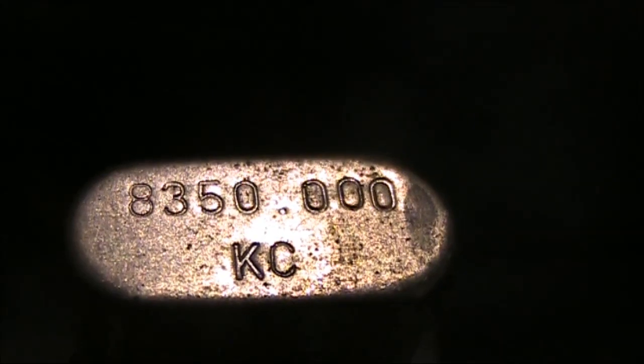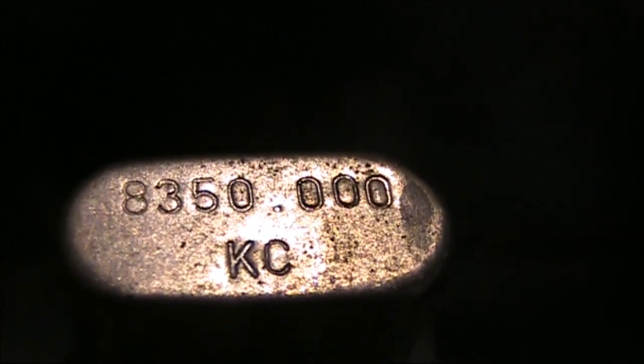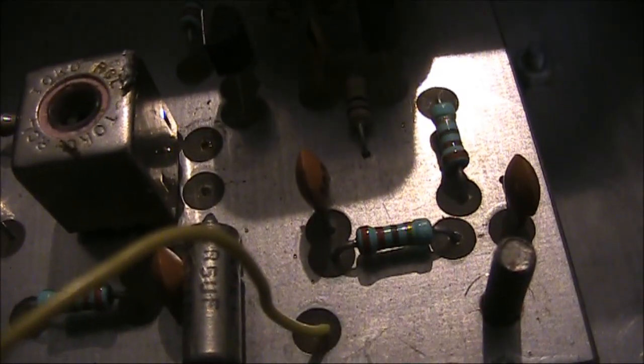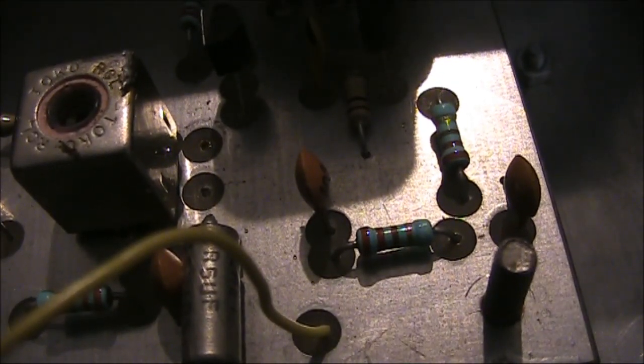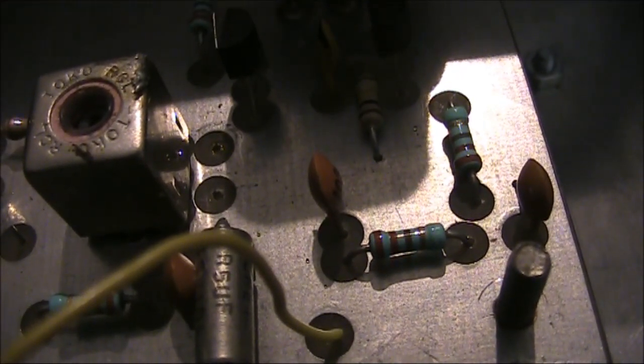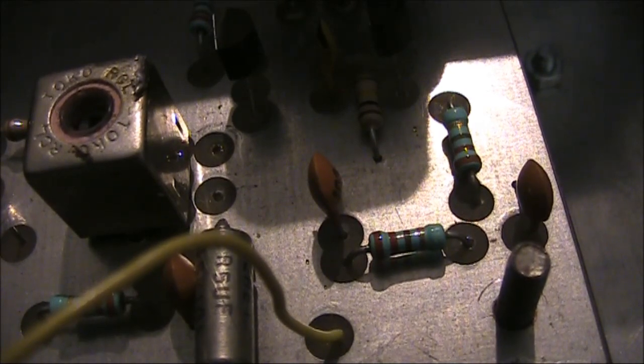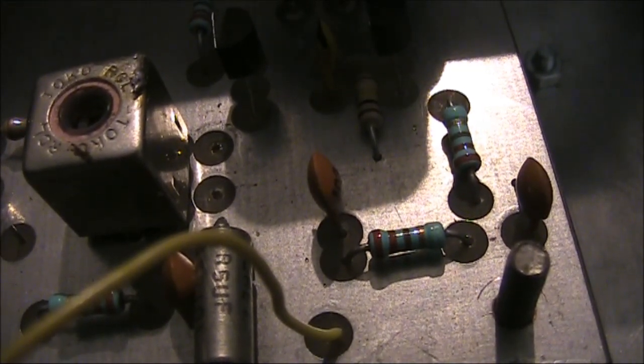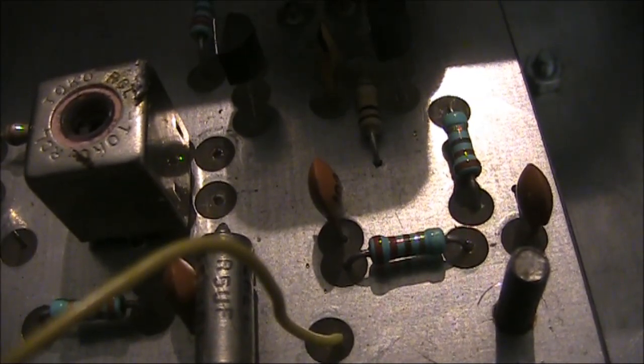Note, though, that the marking on the can for a crystal like this is the fundamental frequency. And in an oscillator like this, it is quite possible it is oscillating in overtone mode. The overtone mode of a crystal is not exactly 3, 5 or 7 times like a harmonic would be.